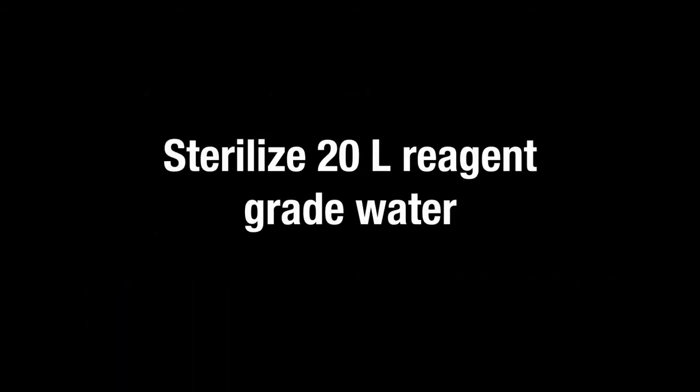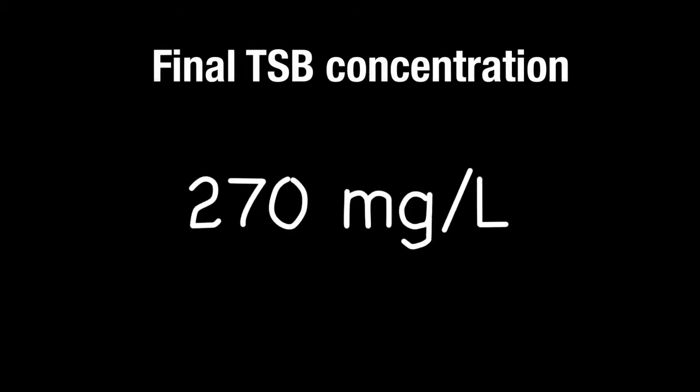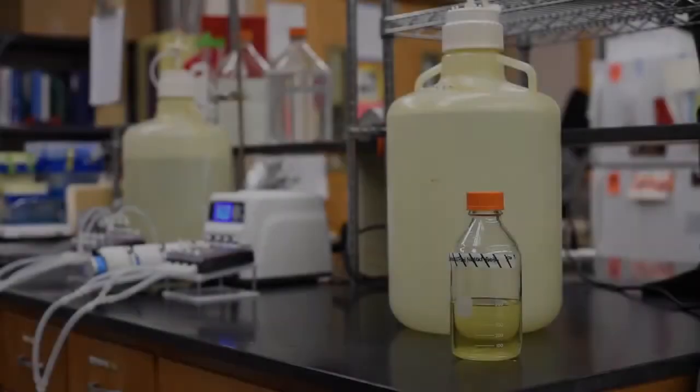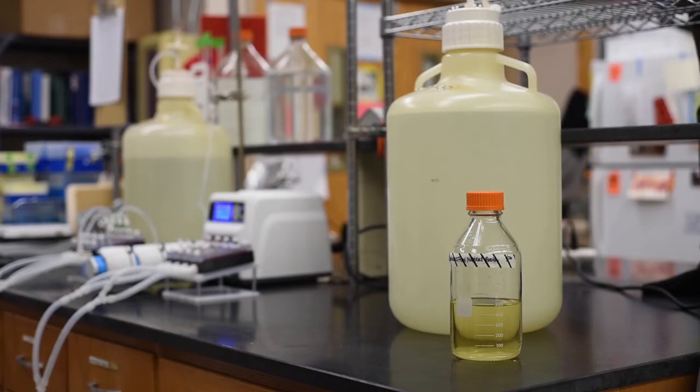Sterilize 20 liters of reagent grade water. Note the actual volume after autoclaving. To prevent caramelization, the nutrient medium concentrate of TSB is prepared separately. The final TSB concentration required in the carboy is 270 milligrams per liter. Choose a volume in which to prepare the nutrient concentrate. In this example, 0.5 liters. To calculate the amount of TSB needed, add 0.5 liters to the autoclaved volume in the carboy. Multiply the volume by 270 milligrams per liter. Add the appropriate amount of TSB to a glass bottle along with 0.5 liters reagent grade water and sterilize appropriately.